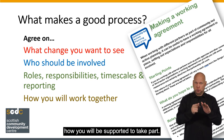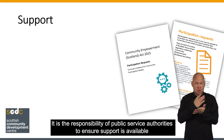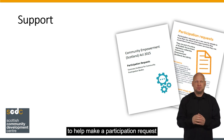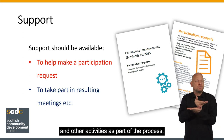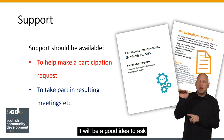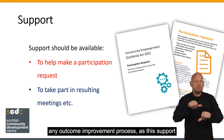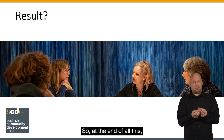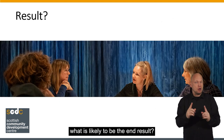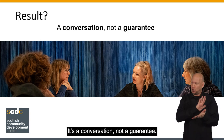It's also important to establish how you will be supported to take part. It is the responsibility of Public Service Authorities to ensure support is available to help make a participation request, and to take part in the resulting meetings and other activities as part of the process. It will be a good idea to ask about support before you make a participation request, and also before you enter into any outcome improvement process, as this support may not be offered automatically. So at the end of all this, what is likely to be the end result? It is important to say that just because your participation request is agreed to, doesn't mean you will get what you wanted. It's a conversation, not a guarantee.